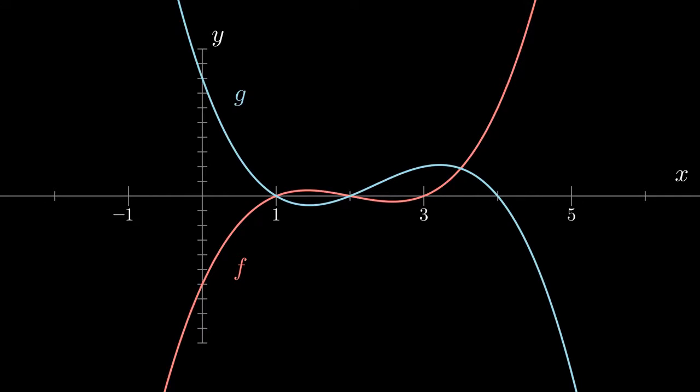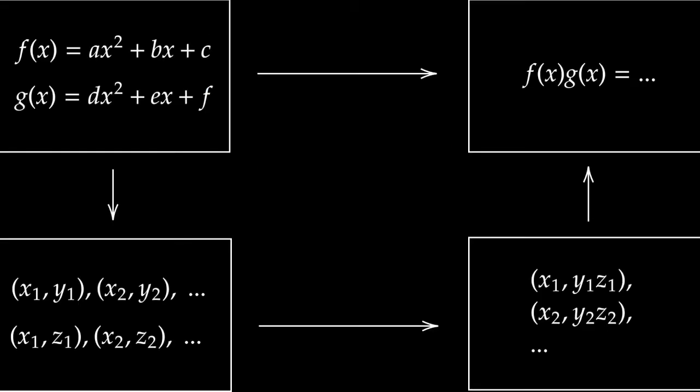Often in computer science, algorithms are made faster by changing the way data is stored. Are other representations of polynomials easier to multiply? Well, yes. If we have two polynomials defined as sets of points, multiplying the polynomials becomes as easy as multiplying together the corresponding y values. This assumes that the x-coordinates are all the same, but this is still a tantalizing speedup.